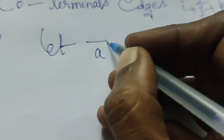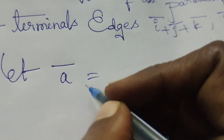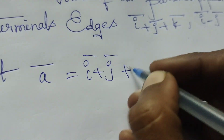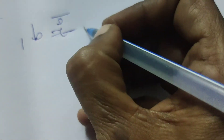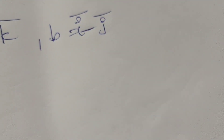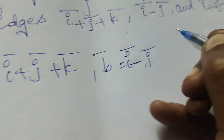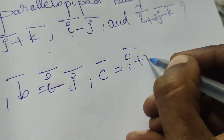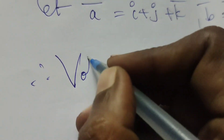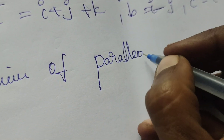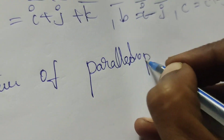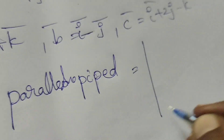Find out the volume of the parallelepiped. Given the co-terminal edges: first edge, a-bar equals i-bar plus j-bar plus k-bar; b-bar equals i-bar minus j-bar; and c-bar equals i-bar plus 2j-bar minus k-bar. Therefore, the volume of the parallelepiped is found using the determinant method.